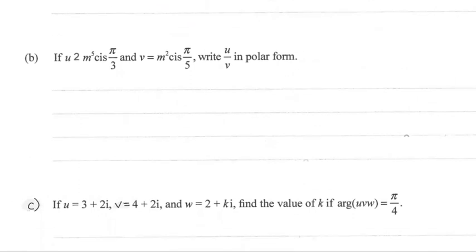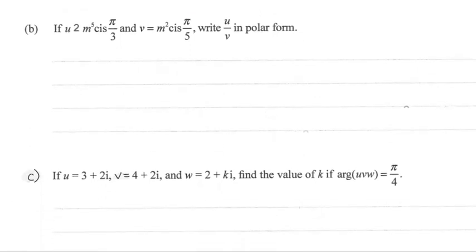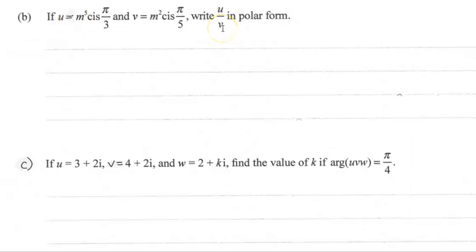Okay, for part b, if u is equal to m to the 5 cis pi by 3, we need to find u over v in polar form, and it helps that each of them have been given to us in polar form already. So this is actually quite a straightforward question.